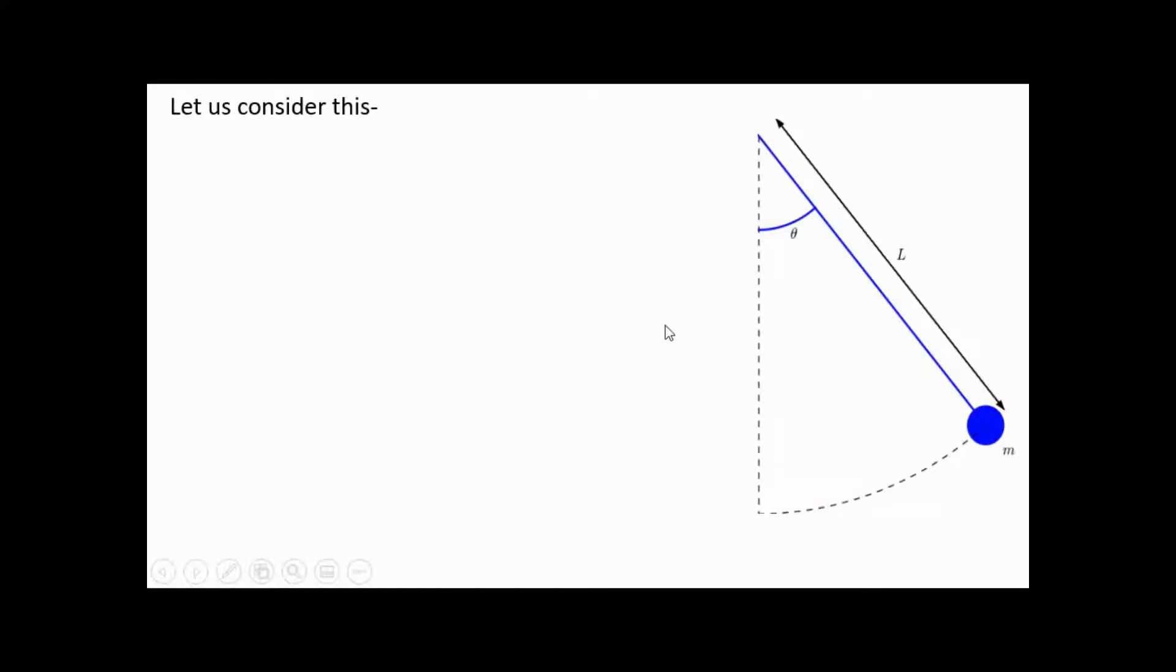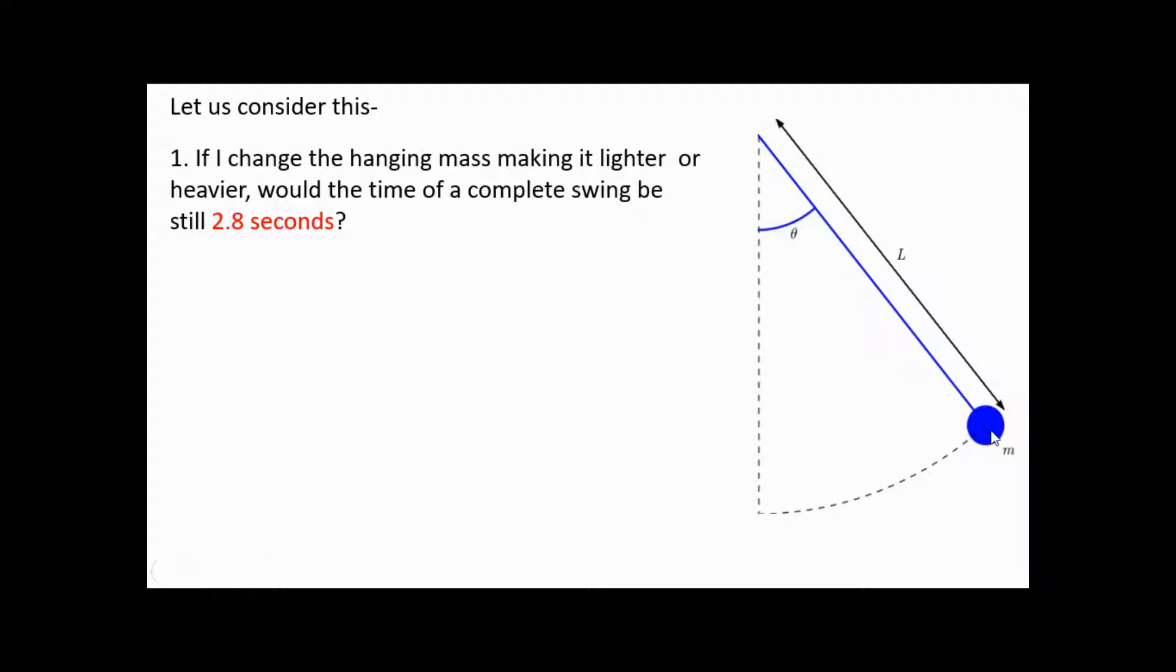Let us consider this. If I change the hanging mass, make it lighter or heavier, would the time of a complete swing be still 2.8 seconds?